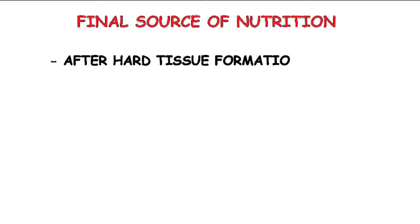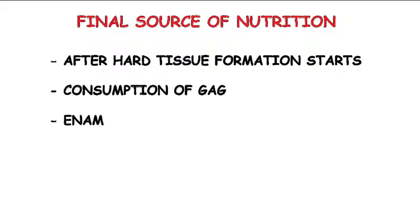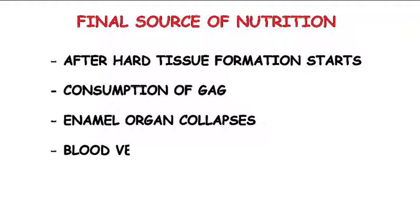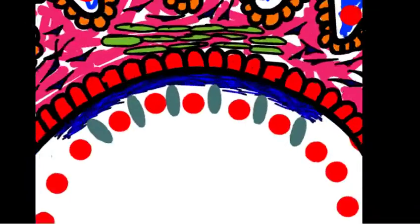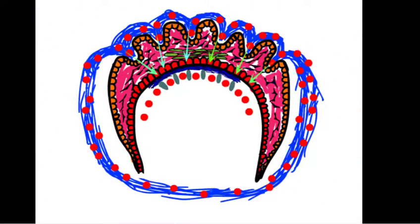Compared to glycosaminoglycans, which is a temporary source of nutrition, the final source of nutrition is permanent after the hard tissue formation starts. After the consumption of glycosaminoglycans the enamel organ collapses, and along with the collapsing enamel organ the dental sac also comes in close proximity to the ameloblasts. So the ameloblasts can finally derive their nutrition from the blood vessels of the dental sac, and this source of nutrition is for the lifetime of the ameloblasts. As the enamel organ collapses, the dental sac vessels come in close proximity to ameloblasts from where the further nutrition is derived.